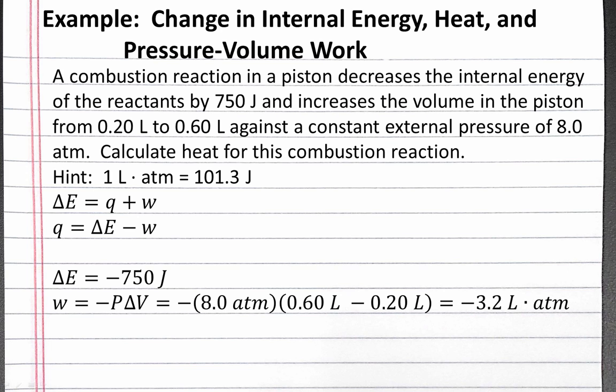We can use the equation work equals negative pressure times the change in volume. And in the problem, we have an 8 atmosphere constant external pressure, and our final volume minus our initial volume is 0.6 liters subtract 0.2 liters. Multiplying these out, we get negative 3.2 liter atmospheres for work.